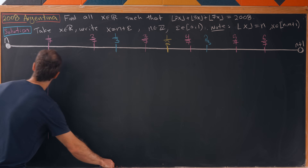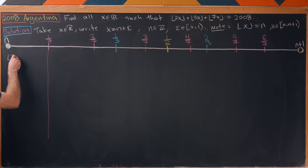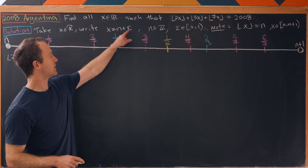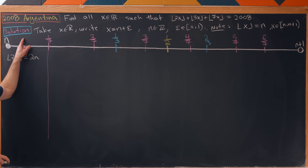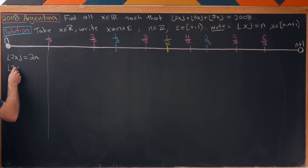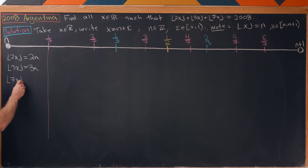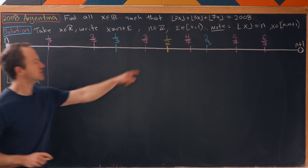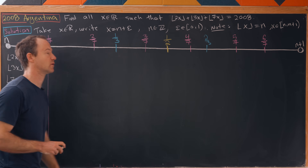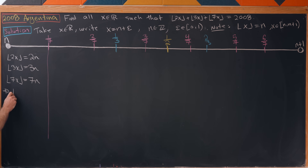Starting with the first region: if x is there, the floor of 2x equals 2n because ε is less than one-half so 2ε is less than 1. Similarly, floor of 3x equals 3n, and floor of 7x equals 7n. Adding these up: floor(2x) + floor(3x) + floor(7x) = 2n + 3n + 7n = 12n, and we need this to equal 2008.